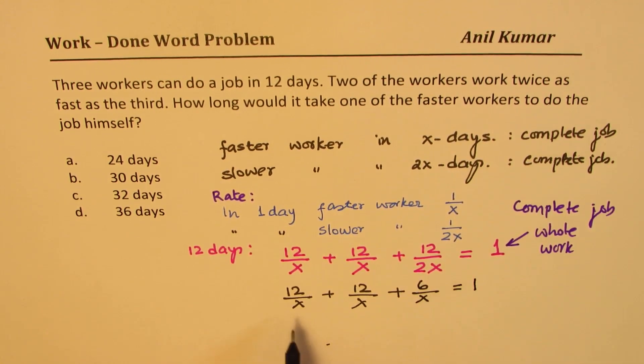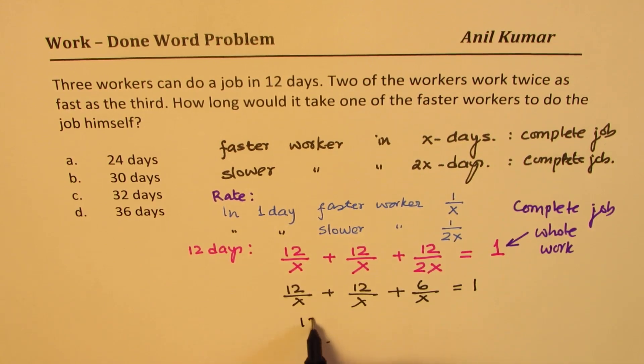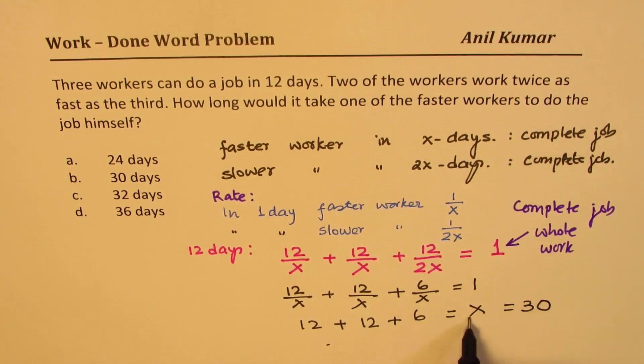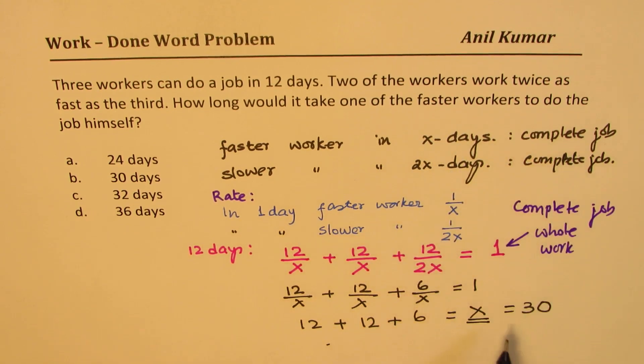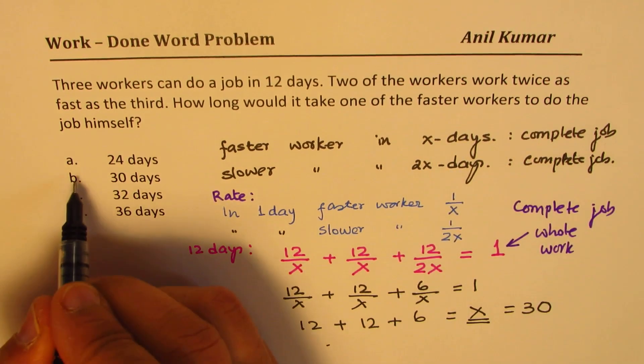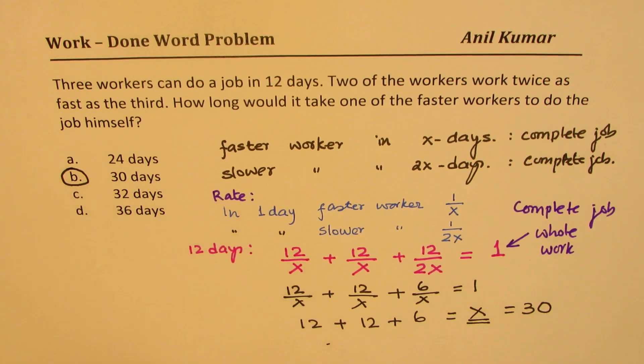If I multiply by X, I get 12 + 12 + 6 = X. So 12 + 12 is 24, plus 6 is 30. So what was X? Faster worker in X days can complete the job, so 30 days, which is our option B.